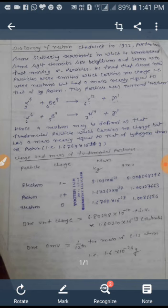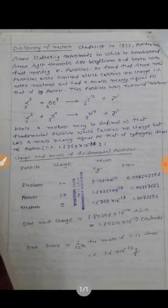He performed some scattering experiments like beryllium and boron with fast moving alpha particles. He found that some new particles were emitted which carry no charge, were neutrons but had a mass equal to that of proton.